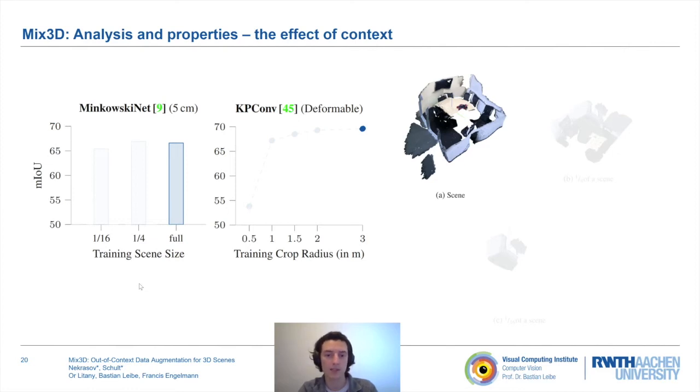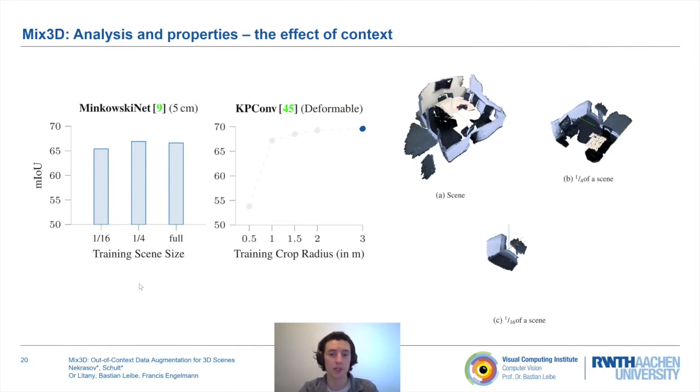Intuitively, context provides additional global information that is helpful for making local predictions on point level. To verify this hypothesis, we artificially reduce the scene context. In particular, we train different models on small regions of scenes. For example, just on a quarter of the original scene, or on a sixteenth of the original scene. As a consequence, the model sees only a fraction of the original scene, and therefore cannot rely on global context.